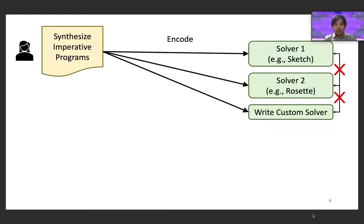One of the problems here is that, although it's unlikely that Alice is going to know a priori which of the three solvers will actually solve her problem, all of these tools pose different syntactic restrictions. For example, Sketch is based in C, Rosette is based in Racket, and similarly, Alice's own solver is likely tied to a specific language. Because of this, Alice is going to have to encode her problem three times in different syntactic formats to try all these solvers, even though semantically she is trying to solve a single program synthesis problem.